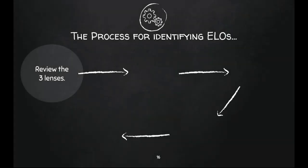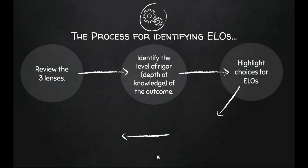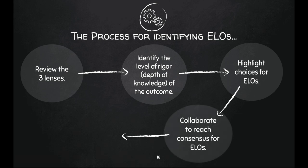Here are the steps for the process of identifying ELOs. The first step is to review the three lenses, ensuring that your entire team has the same understanding of transfer, rigor, and scaffolding. Next, identify the rigor of the outcomes you're previewing — the DOK levels of ELOs should be varied. Then, do a preliminary highlighting of choices for the ELOs. The fourth step is to collaborate and discuss whether the selected outcomes are actually ELOs, using the three lenses to reach consensus.